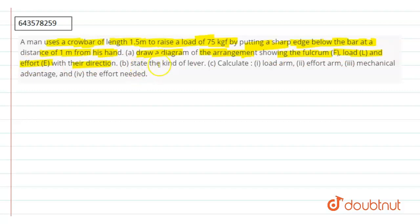State the kind of lever. First part is we have to draw the diagram and second part we have to state the kind of lever. In part C we have to calculate load arm, effort arm and mechanical advantage and the effort needed. Let us start.